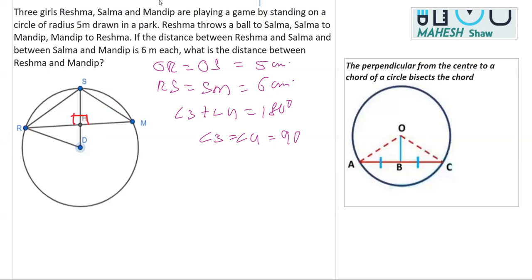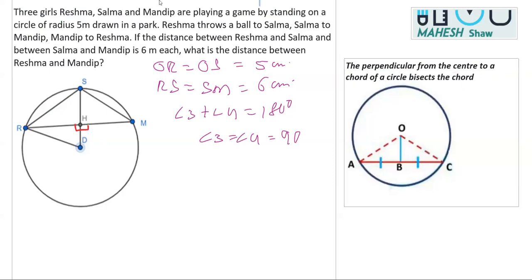So angle 3 equals angle 4 equals 90 degrees. We have proved that SH is perpendicular to RM. As you can see, this perpendicular is drawn from the center and is perpendicular to the chord RM. We know that the perpendicular drawn from the center bisects the chord — so the chord RM is bisected at point H. That means RH equals HM.